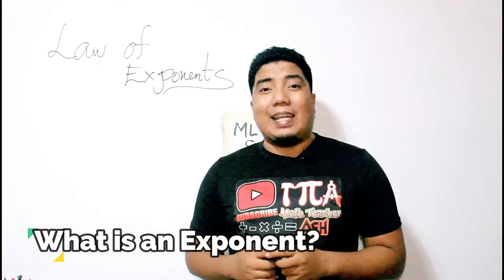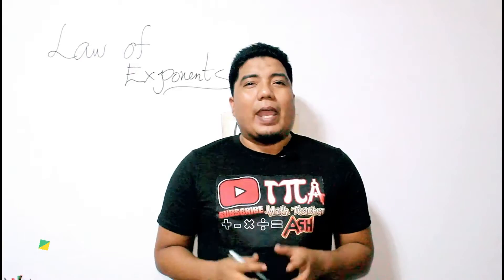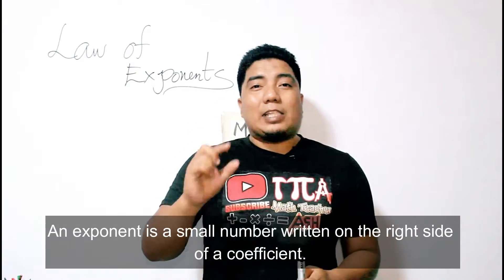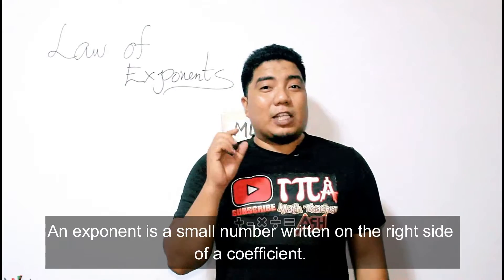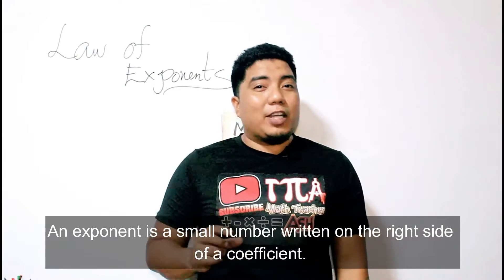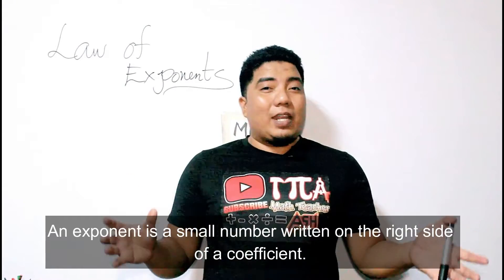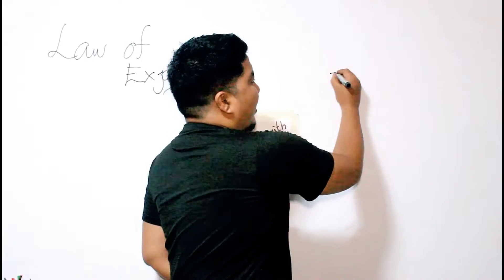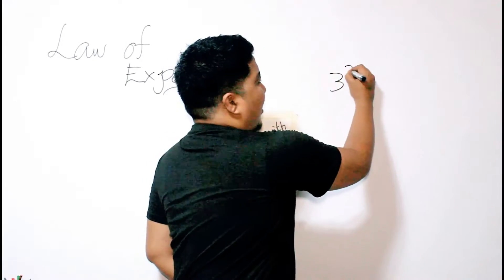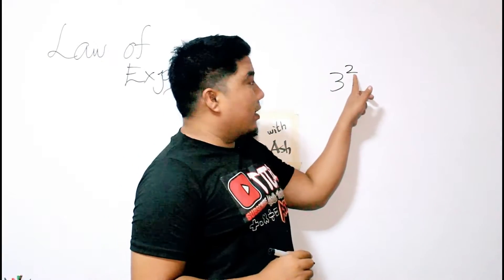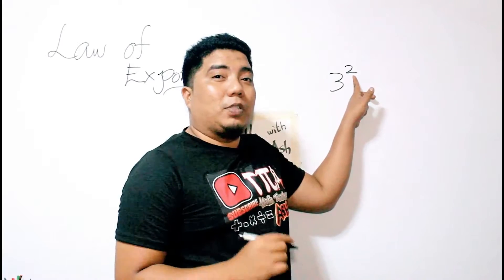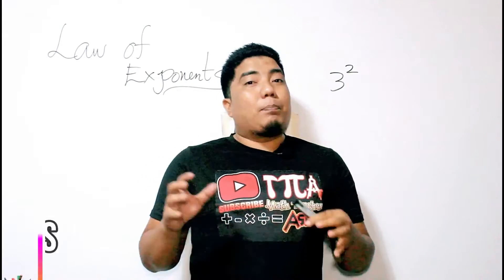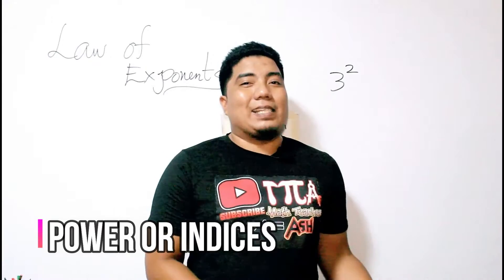What is an exponent? An exponent is the small number that is being lifted from a given expression, variable, constant, or any number. For example, the exponent is the little number — the 2. An exponent is also known as the power or the indices.